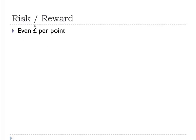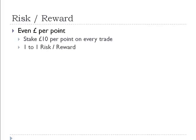Let's look at staking an even number of pounds per point. For every point the market moves, we're going to do £10 per point, assuming one-to-one risk-reward — so the amount we gain equals the amount at risk. The first trade is a 20-point winner: 20 times £10 is £200. The second trade is also a 20-point winner, another £200. We're up £400 and making money.